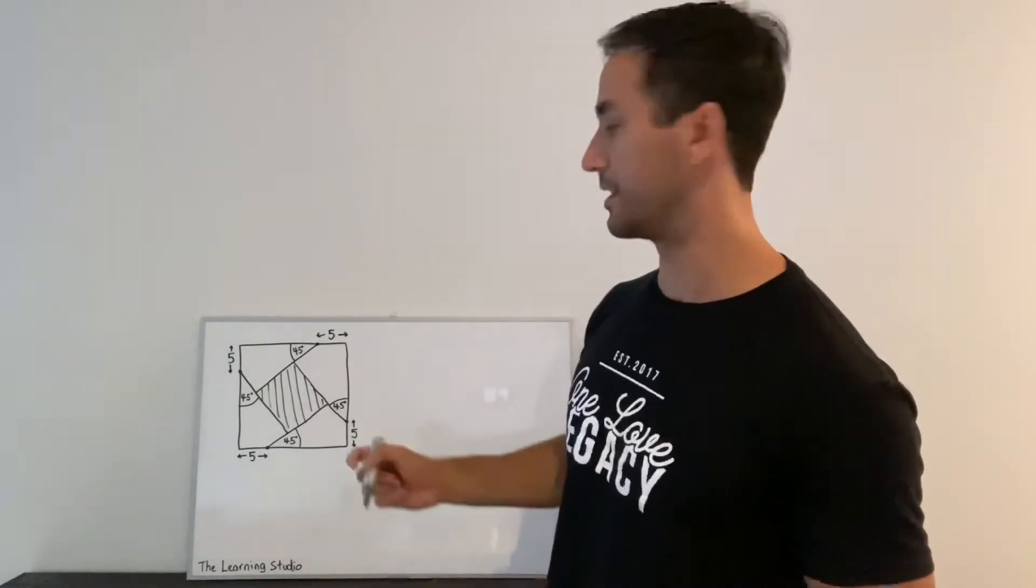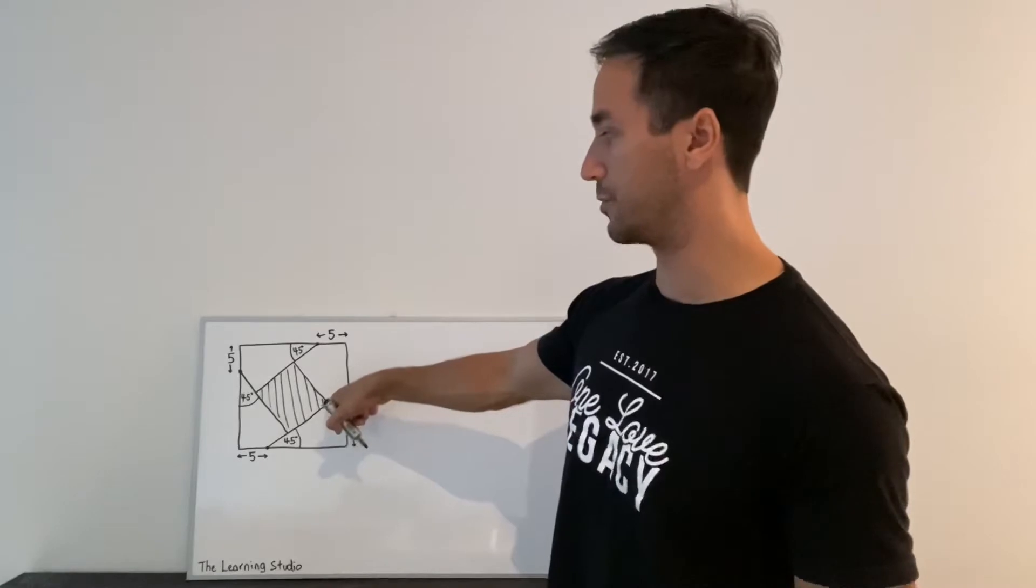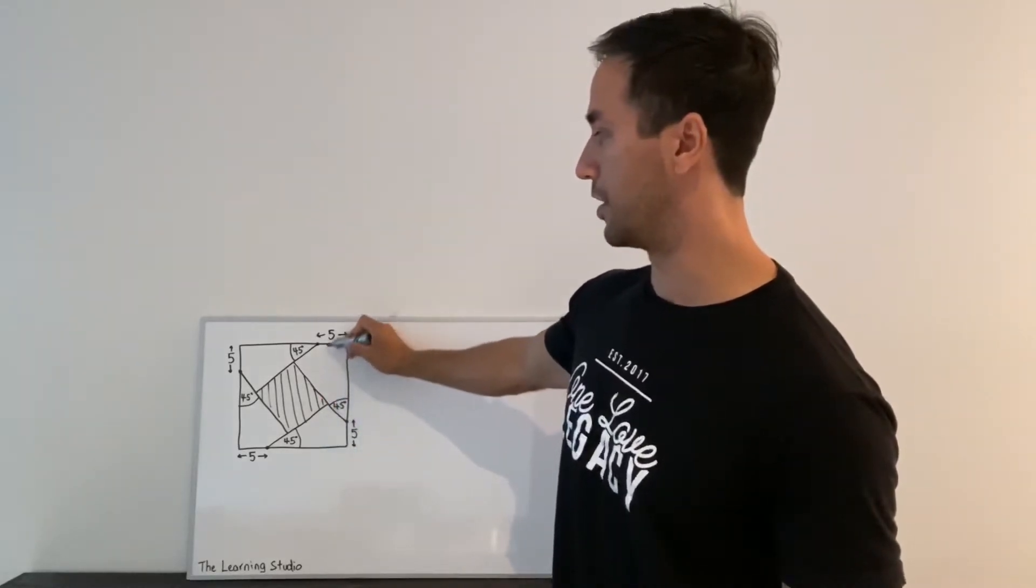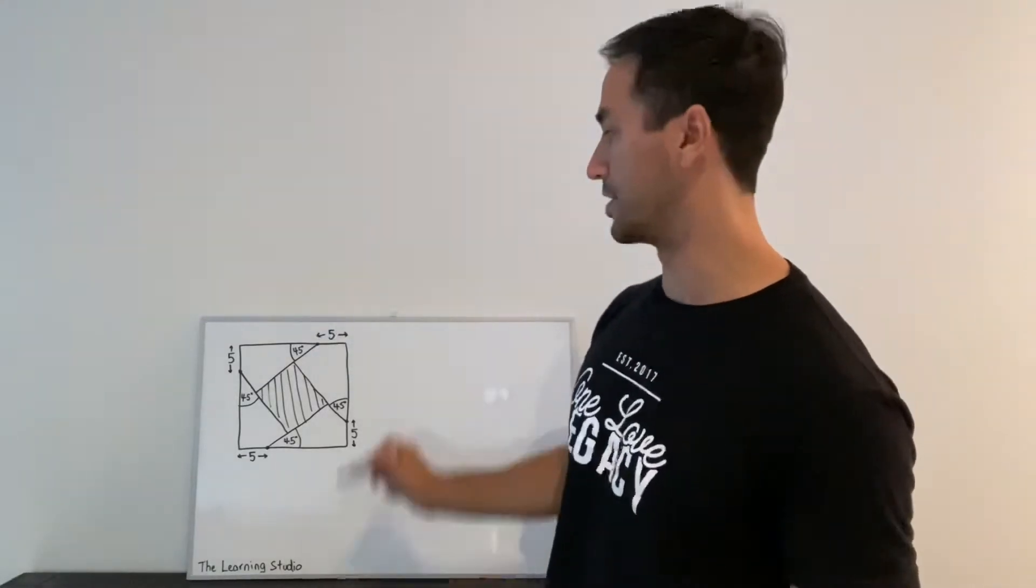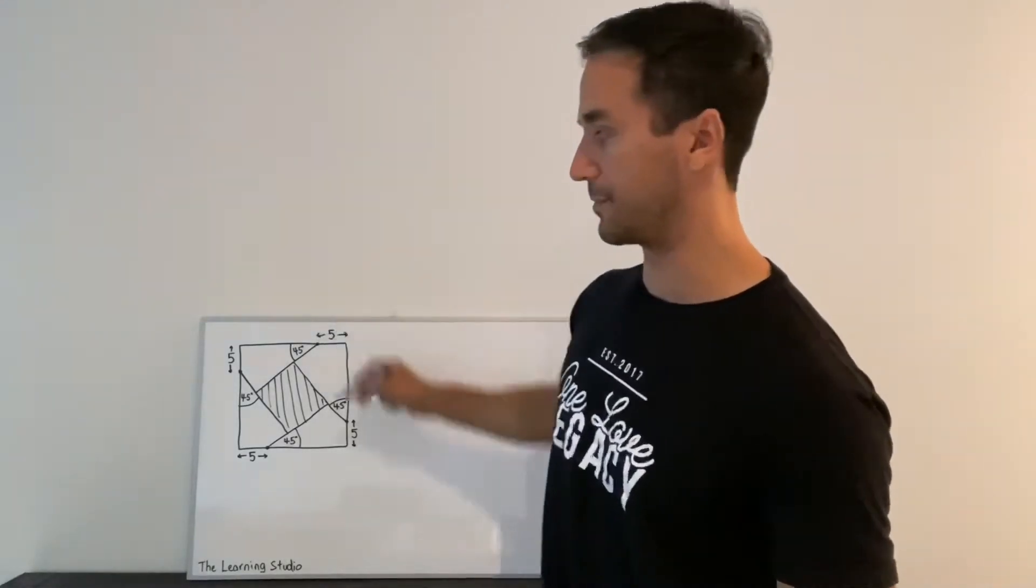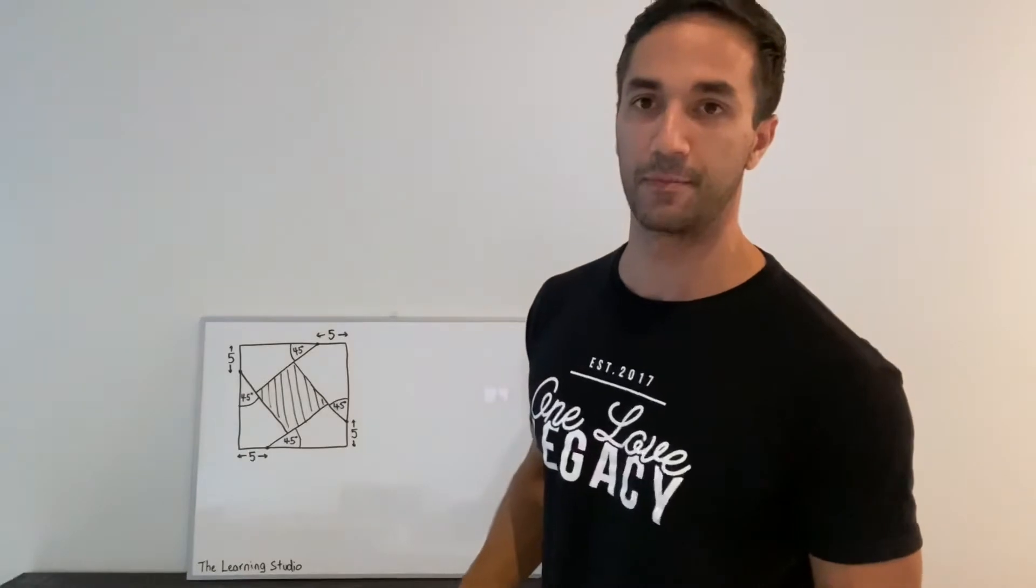So the assumption that I made in the first solution was that these intersection points of these lines lined up perfectly with where that five mark was, which is not the case and you can even see in this drawing here they don't line up very nicely.